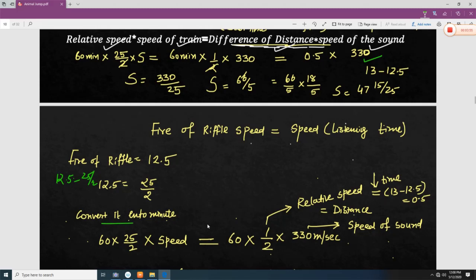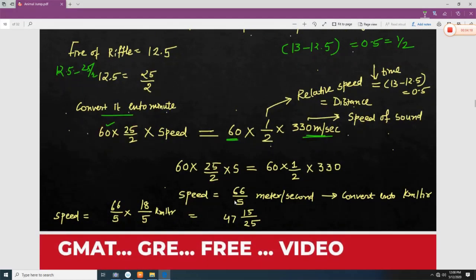So 60 into 25 divided by 2 and we have to find out the speed. Speed is equal to relative distance. Relative distance means 13 minus 12.5 that is 0.5. You can write 0.5 is one half and this is the sound speed.